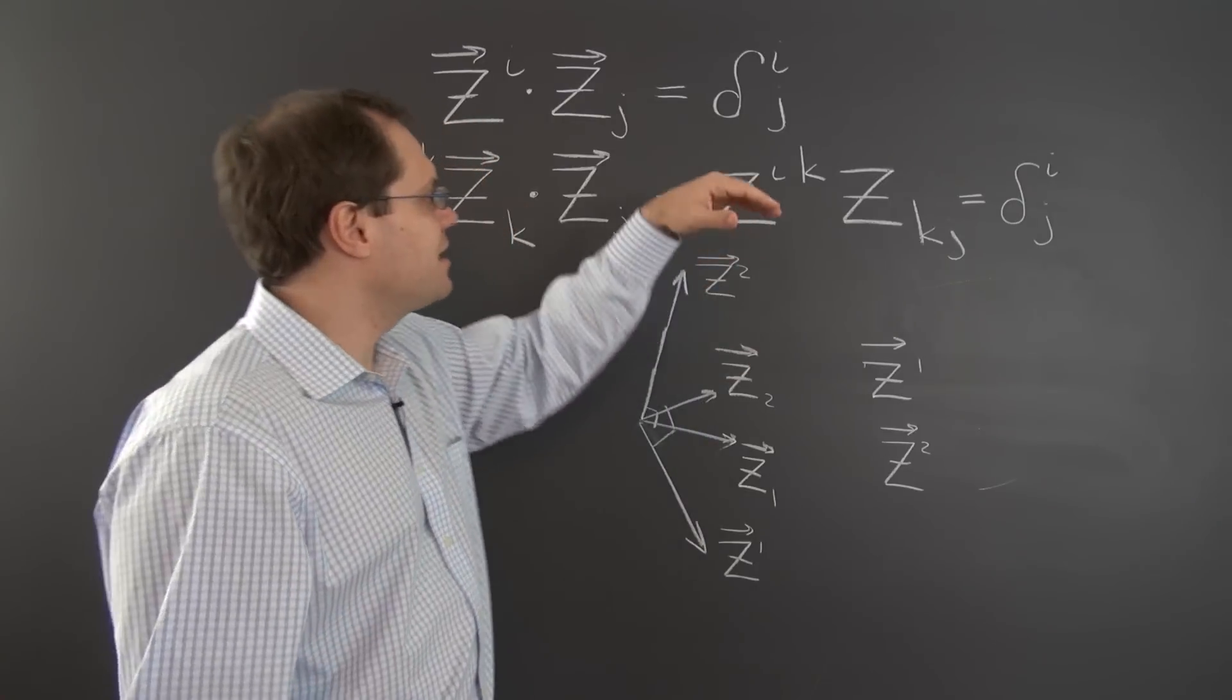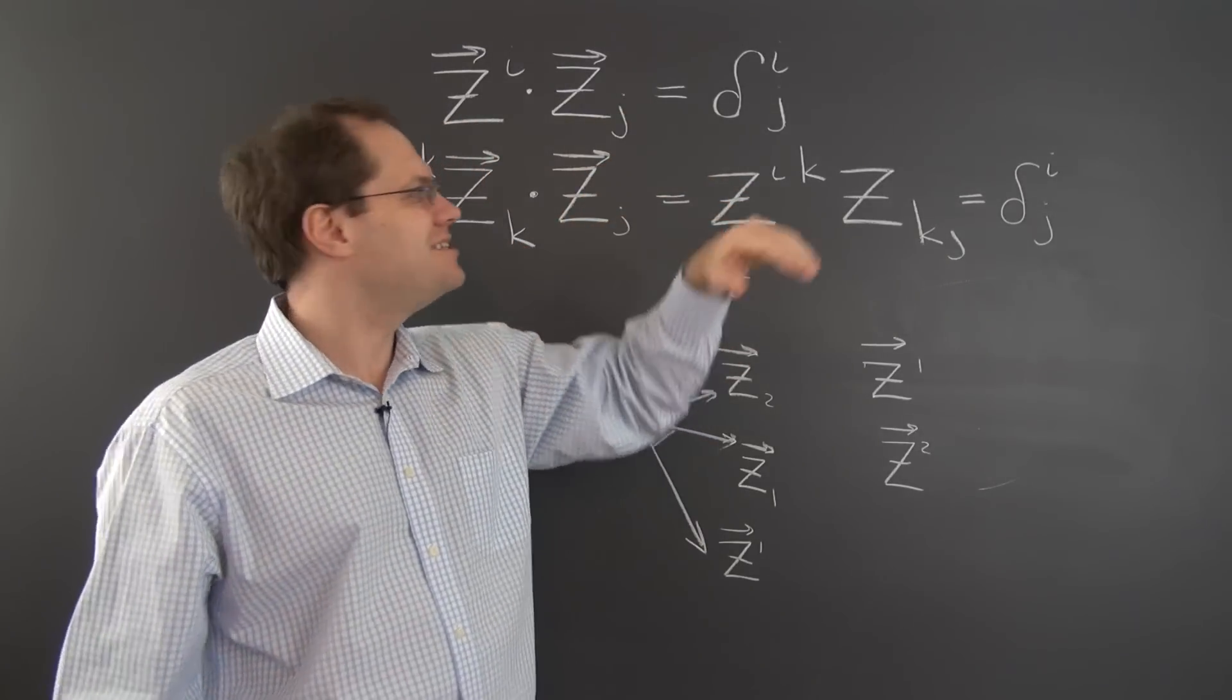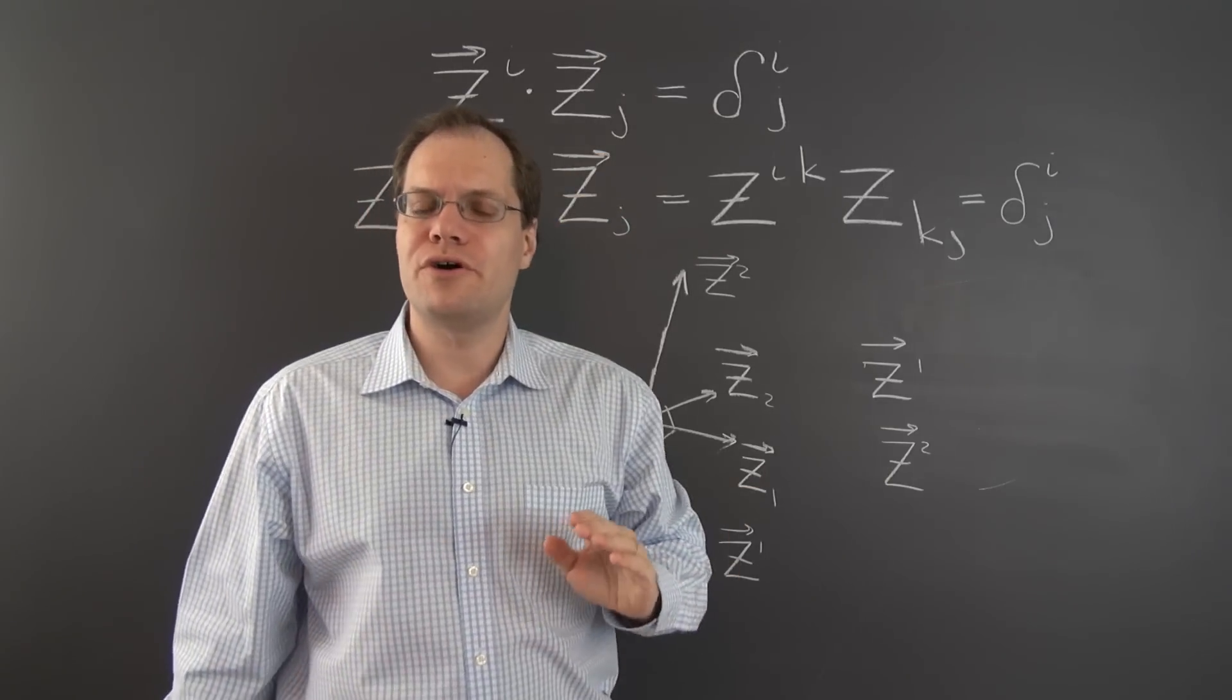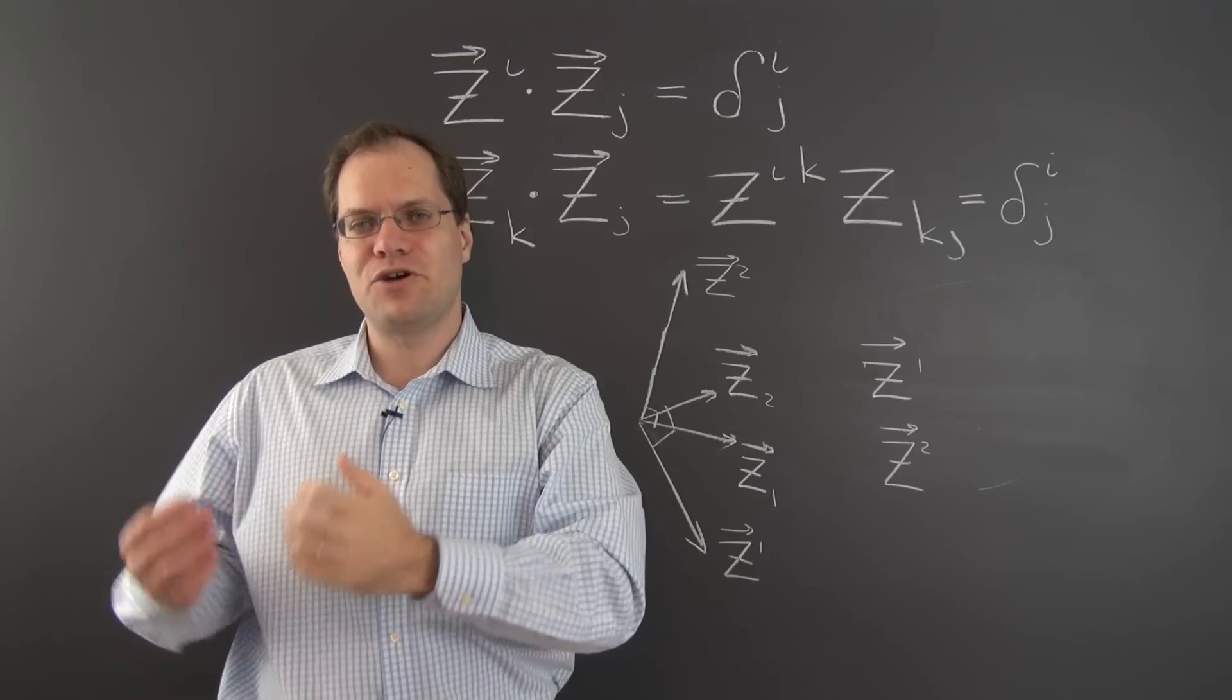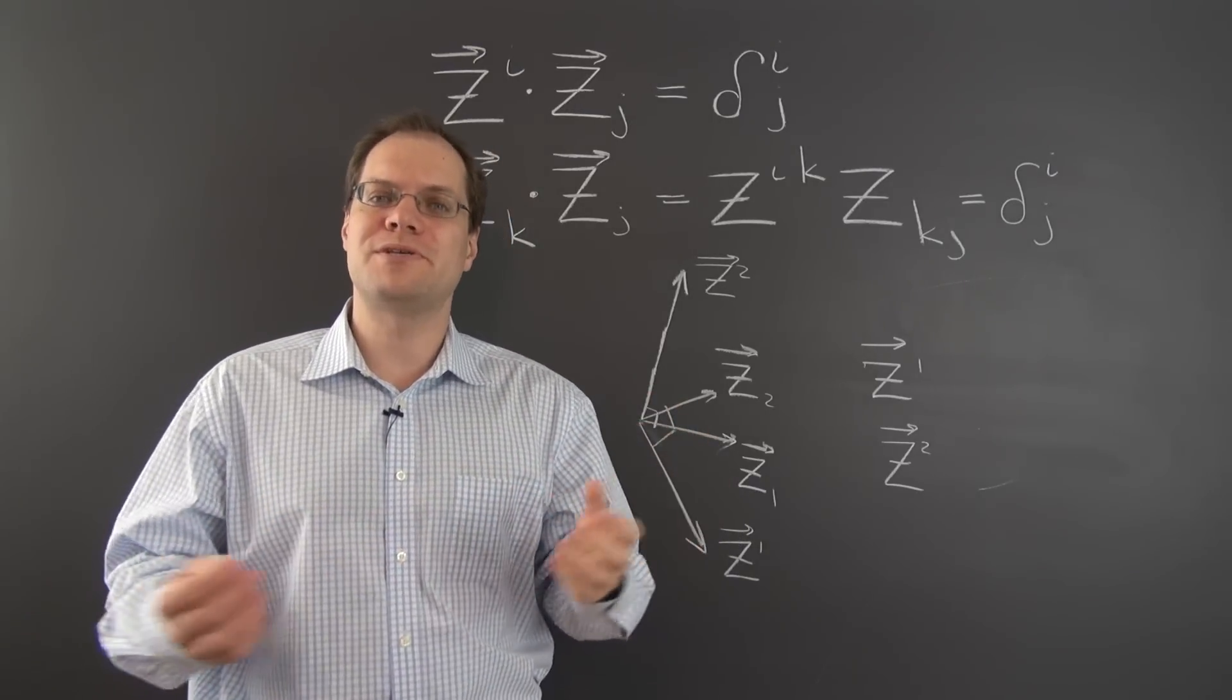So there you go. In any case, this relationship is very easy to derive, and it does say something about orthogonality between the elements of the covariant basis and the elements of the contravariant basis. I hope this was helpful. Here we go. Thank you.